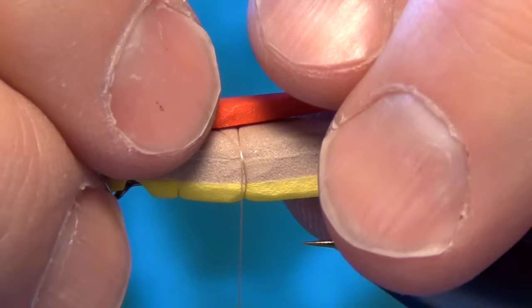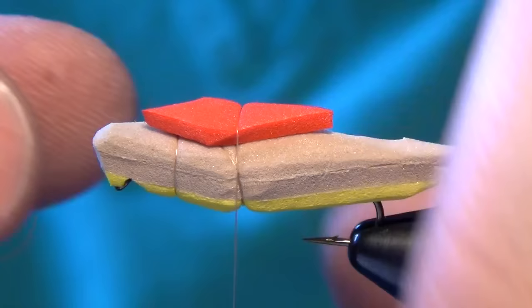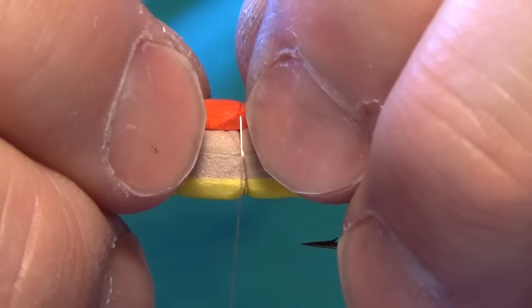Now the first thing we're going to tie in is going to be our little hot spot which I'm just going to use a little piece of red foam and I'm going to put it right on top of the hopper making sure it's as even as you can get it right on top.